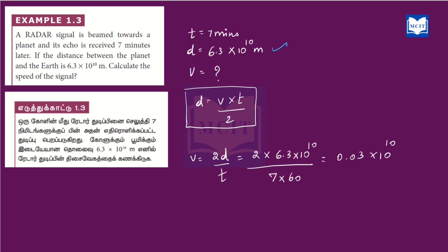Substituting the values: v equals 2d divided by t. That is 2 into 6.3 into 10 power 10, divided by t value which is 7 minutes converted to seconds — that is 7 into 60 seconds. So we substitute 7 into 60 in the denominator and multiply 2 into 6.3 and divide by 7 into 60, giving us 0.03 into 10 power 10.